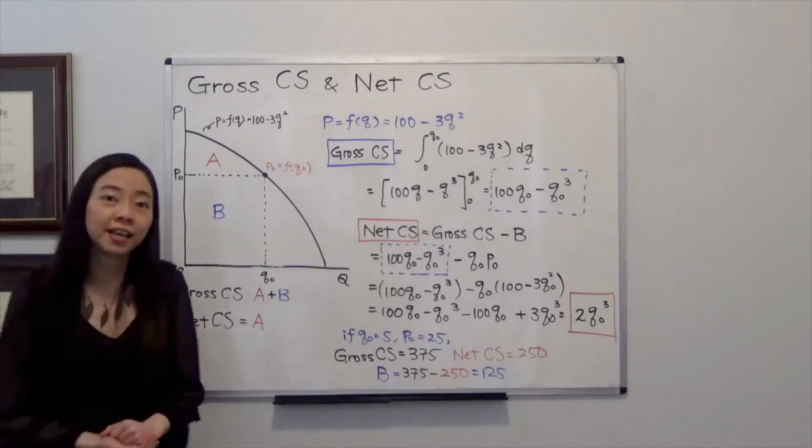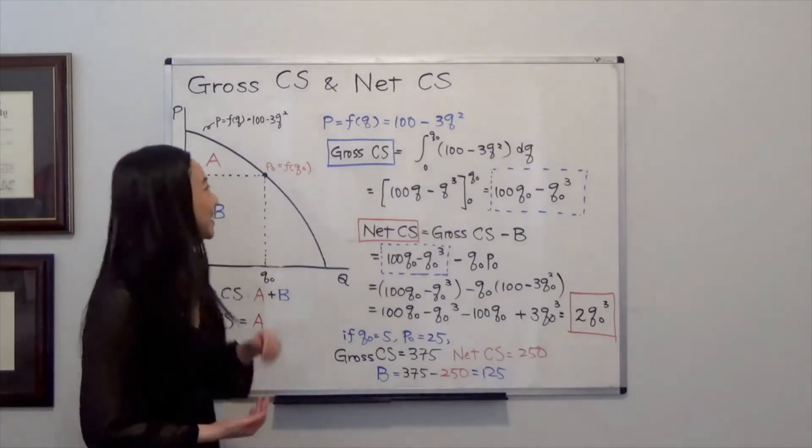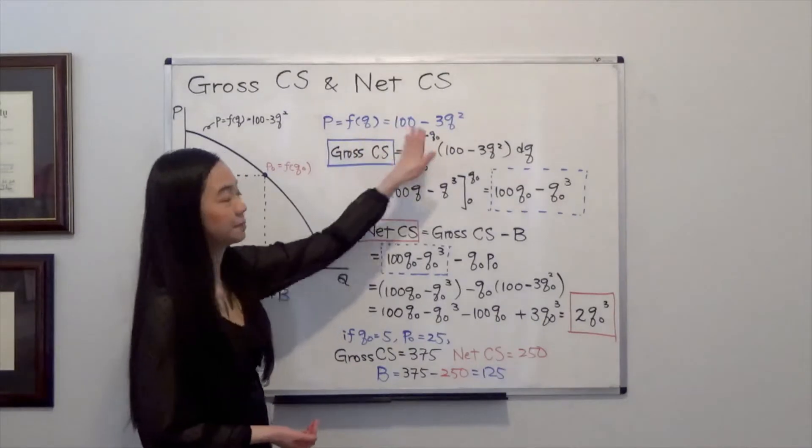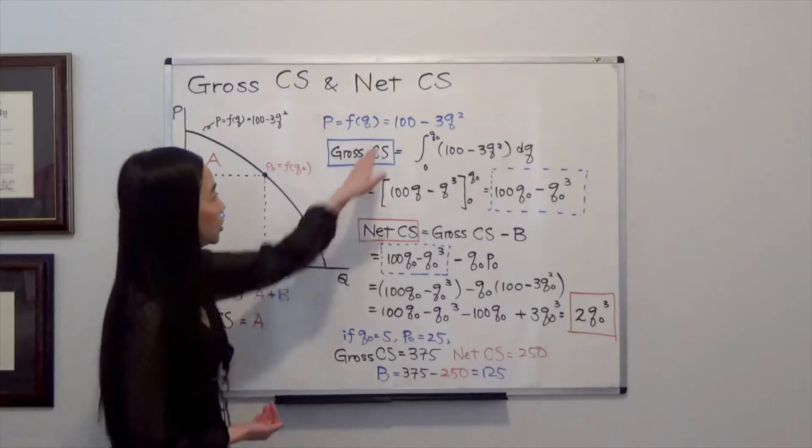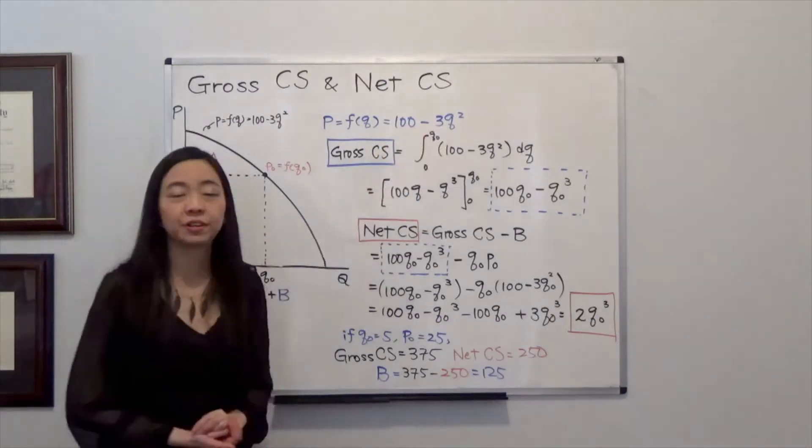So next we're going to take a look at the integration part. This is our inverse demand function. So P is a function of Q, which is 100 minus 3Q squared.